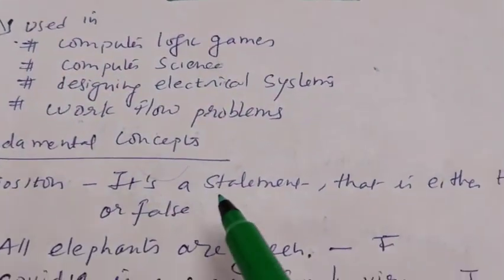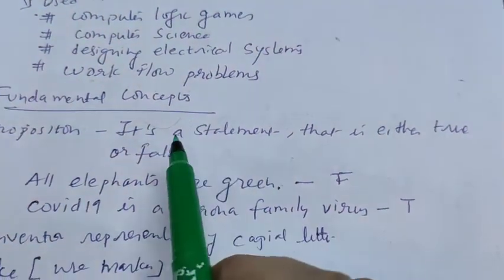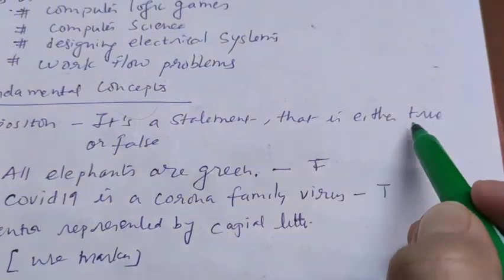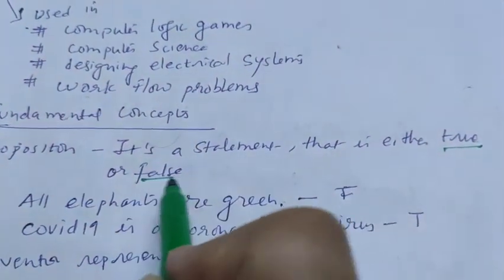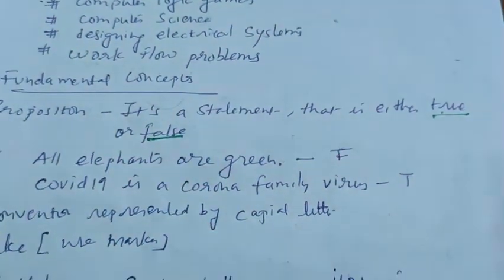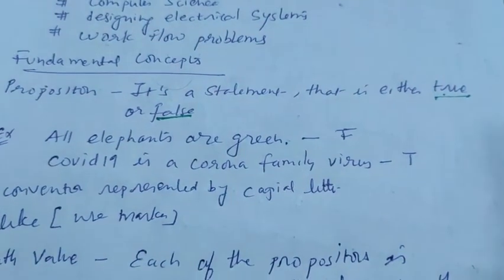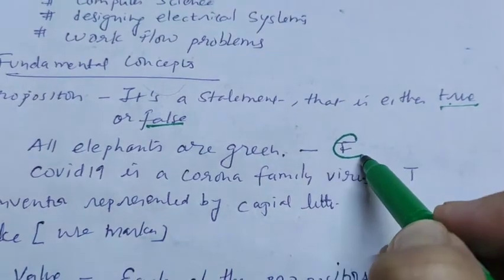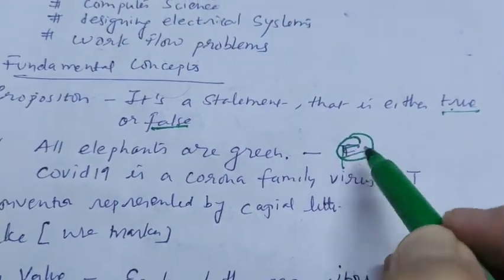What is the fundamental concept behind the proposition? A proposition is a statement that is either true or false. Like all elephants are green. It is based on the value of true or false. It is false.